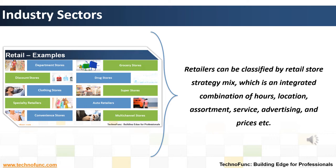First is department stores — a retail establishment that sells a wide variety of goods. Next is discount stores — a retail shop that sells products at prices lower than the typical market price. Third is clothing stores — any shop that sells items of ready-made clothing. A small shop that sells expensive or designer clothing may be called a boutique.